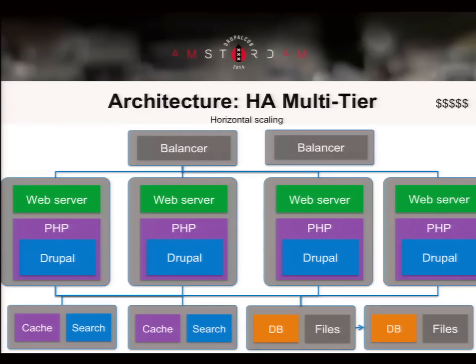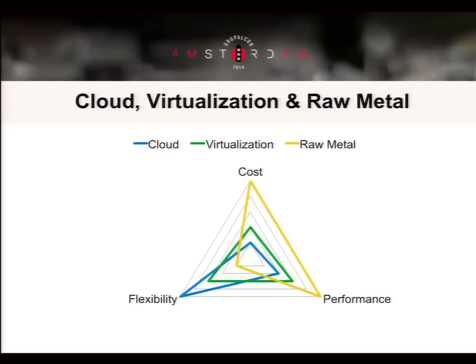This next section covers some technologies and architectures with scores out of five — this is just my opinion, not statistically backed. For hosting when buying servers, there are three ways: raw metal, virtualization, and cloud. Raw metal means buying a proper server — not much flexibility, but high performance. You can't easily scale and if you need another server you have to go buy one and wait weeks. Alternatively, cloud and virtualization offer a lot more flexibility.